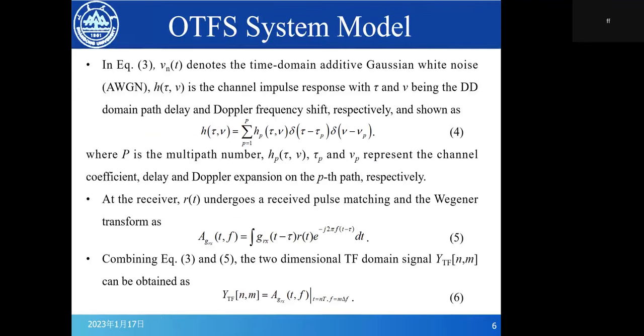In equation 3, v(t) denotes the time-domain additive Gaussian white noise. h(τ,ν) is the channel impulse response with τ and ν being the DD domain path delay and Doppler frequency shift respectively, as shown in equation 4, where P is the multipath number. h_p, τ_p, and ν_p represent the channel coefficient, delay, and Doppler expansion on the p-th path.